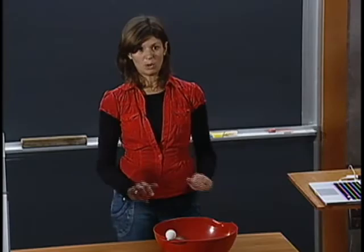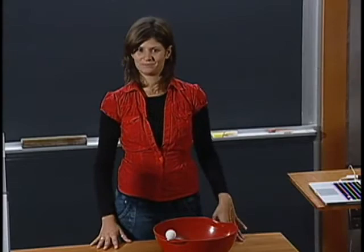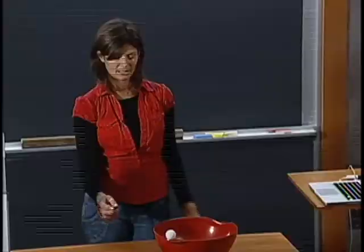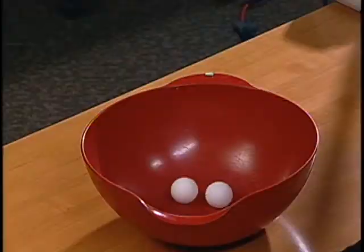Here I have a bowl and two ping pong balls - one at the bottom and the other on the edge. Which one has the higher potential energy? You can discuss it and see you back. I'm sure you got the right answer. The ball at the edge has a higher potential energy than the ball at the bottom, simply because it's in a higher position. Now what happens if I perturb it? It's easy to forecast. After a few oscillations, both balls end up at the bottom of the bowl.